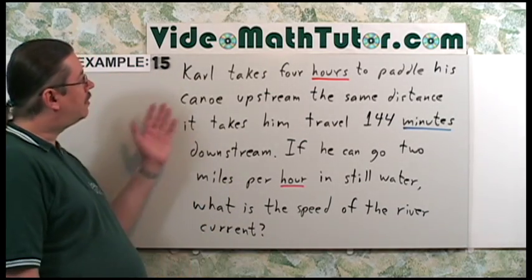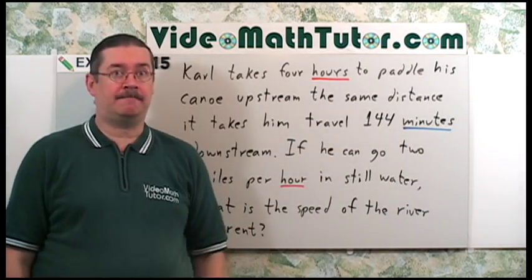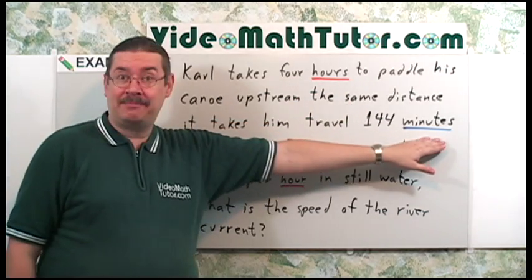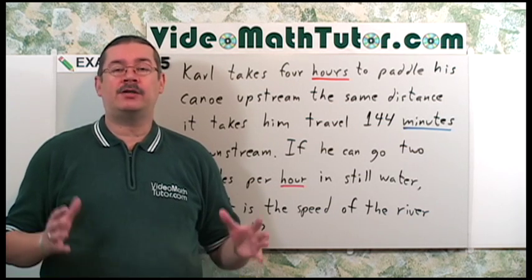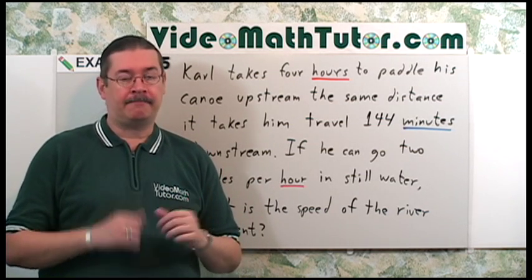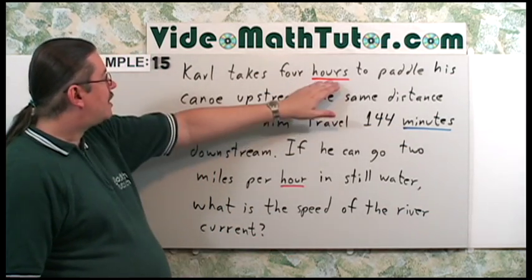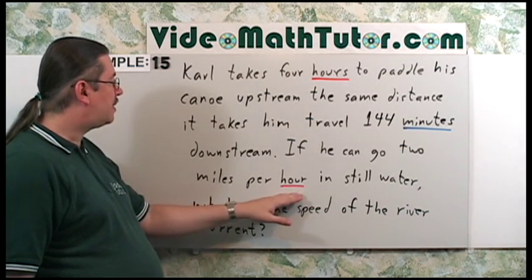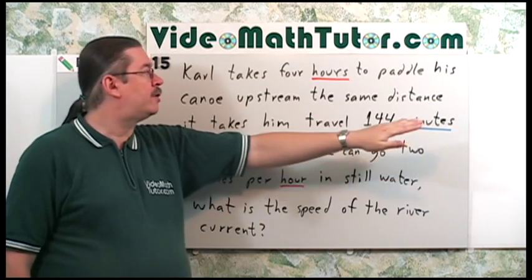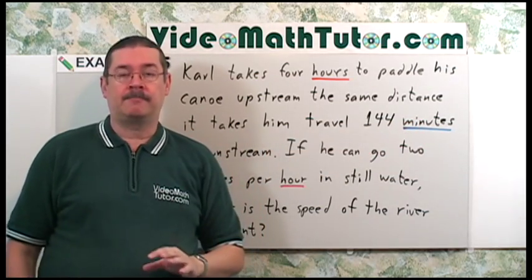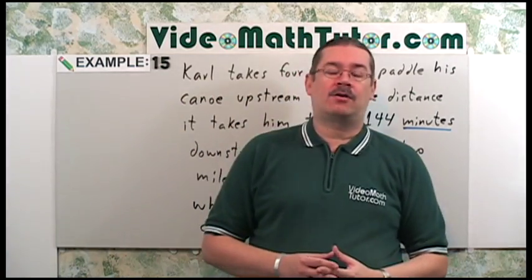As you read through this problem, you may have noticed that there are two units of time that are being mentioned: hours and minutes. So our first step is to convert everything into one set of units of time. Which one should we use? Well, hours are mentioned here and in the speed, miles per hour. Minutes are only mentioned once. So it may be a better strategy to convert minutes to hours. How do we do that? Well, for that, we're going to learn a new procedure called units conversion.